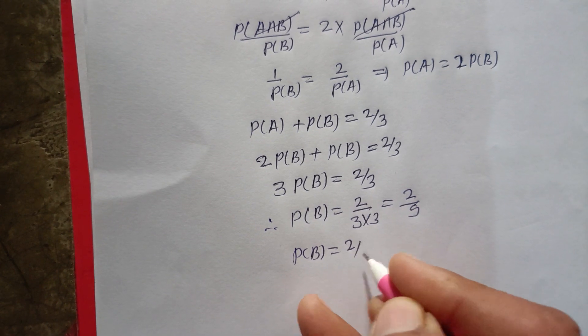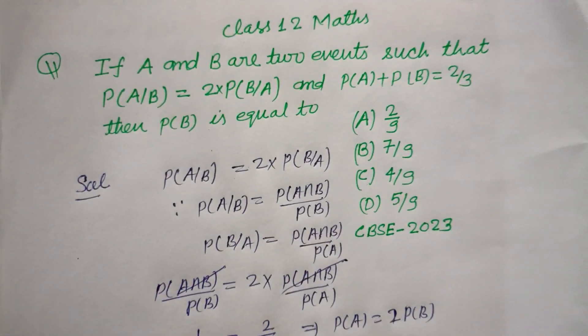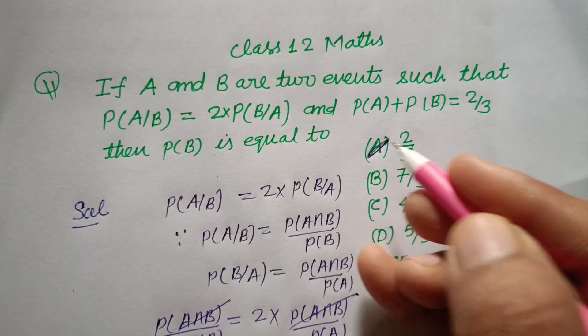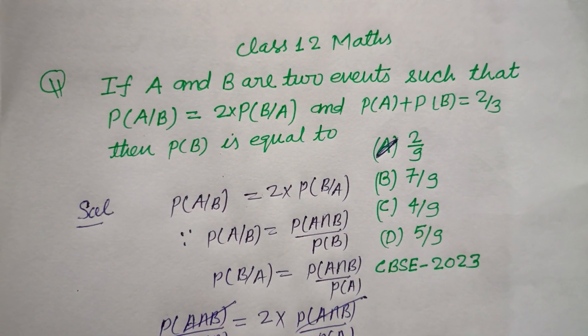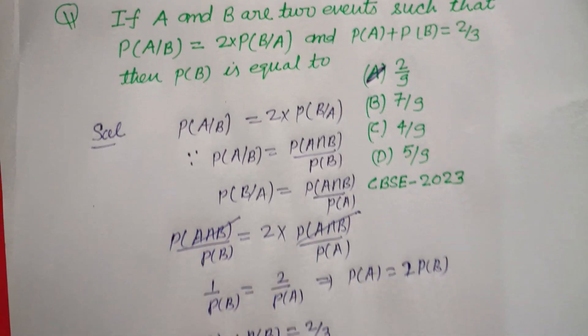So P(B) is 2/9, which is our answer and found in option A. Therefore option A is correct. I hope you got it. Please like the video, subscribe the channel, thanks for watching.